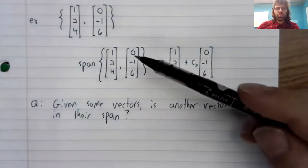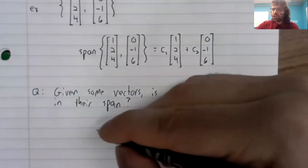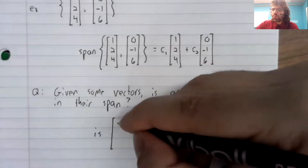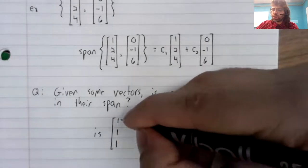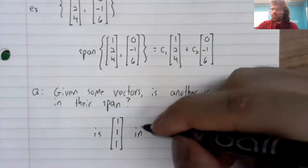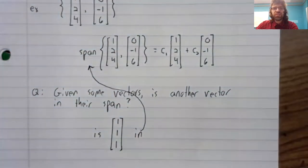For example, given these two vectors, we could ask: is the vector [1, 1, 1] in this span?